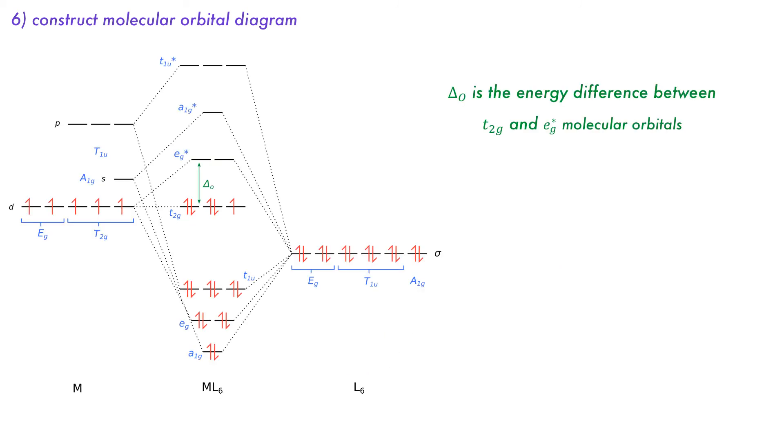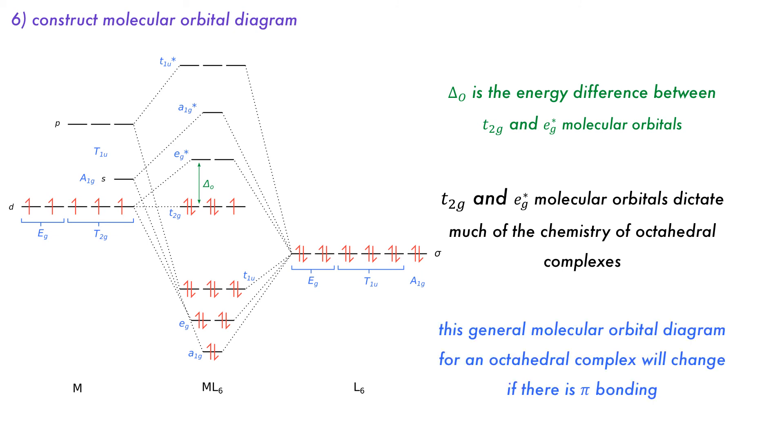Depending on the size of the energy difference between the HOMO and LUMO given as delta octahedral, some electrons will prefer to be in the eg star set rather than the t2g set. It is these frontier orbitals that dictate a lot of the chemistry of octahedral complexes. Remember that this is only for sigma bonding and if there is pi bonding then the t2g set can start to interact, potentially changing its position in the diagram.